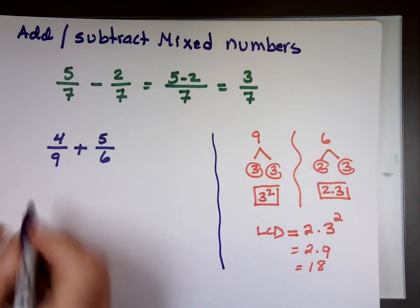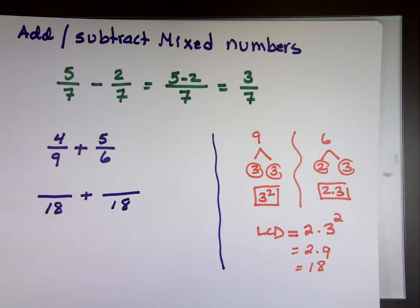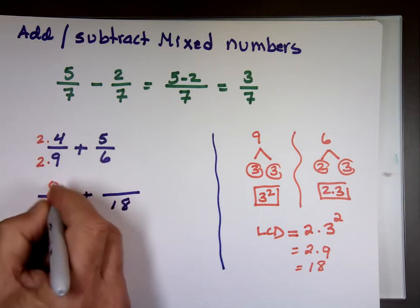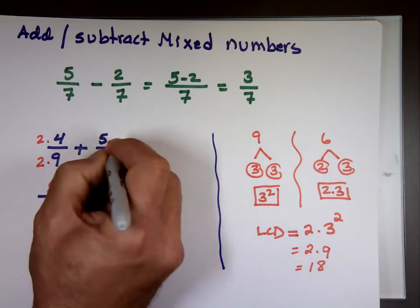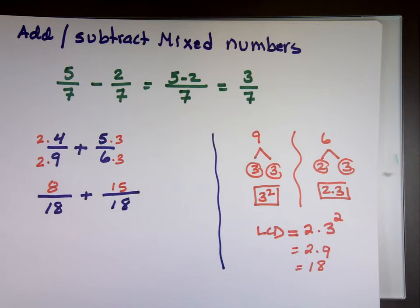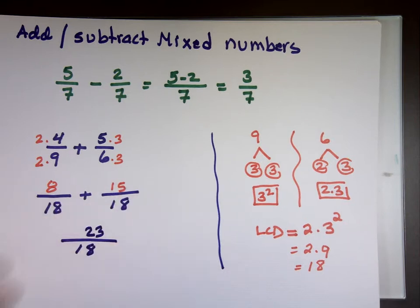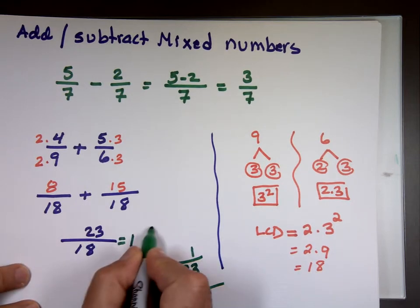Now I need to make both denominators 18. Multiply the 9 by 2 to get 18, so the numerator becomes 2 times 4 = 8. Multiply the 6 by 3 to get 18, so the numerator becomes 5 times 3 = 15. Now combine into one fraction: 8 plus 15 is 23 over 18. Convert to a mixed number: 23 divided by 18 gives 1 remainder 5, so the answer is 1 and 5/18.